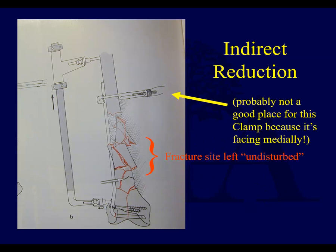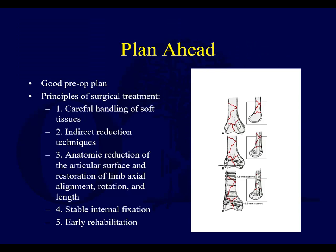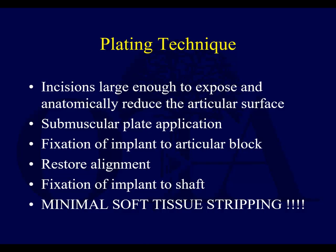Plan ahead, have a good preoperative plan, remember your principles: careful handling of soft tissues, indirect reduction techniques, anatomic reduction of the joint surface, restoration of alignment, rotation, length, stable internal fixation, and early rehabilitation — essentially AO principles. When you plate these, incisions should be large enough to expose and anatomically reduce the articular surface. Plates can often be placed in a submuscular fashion. Then fix the shaft to the articular block with minimal soft tissue stripping wherever possible.